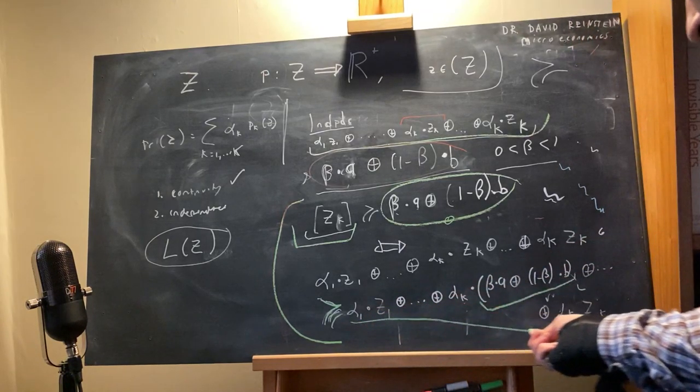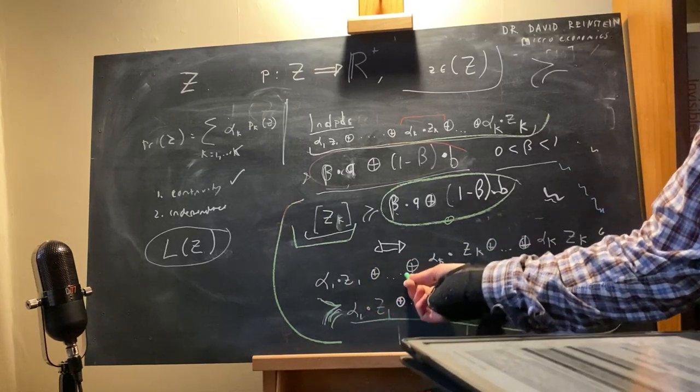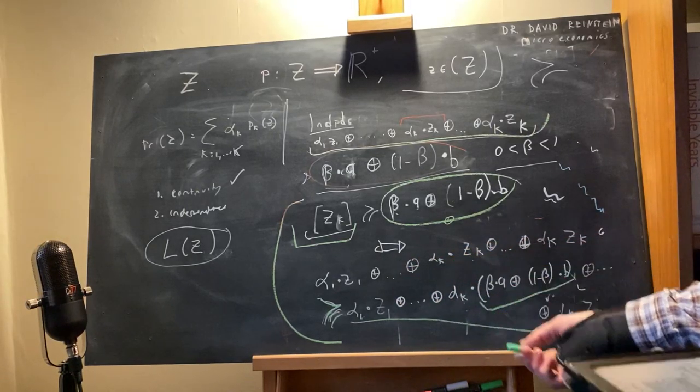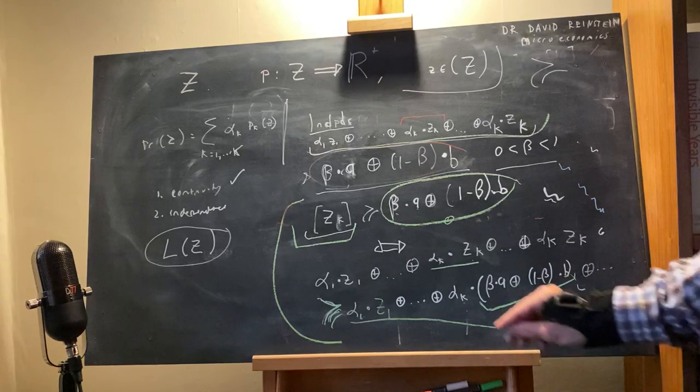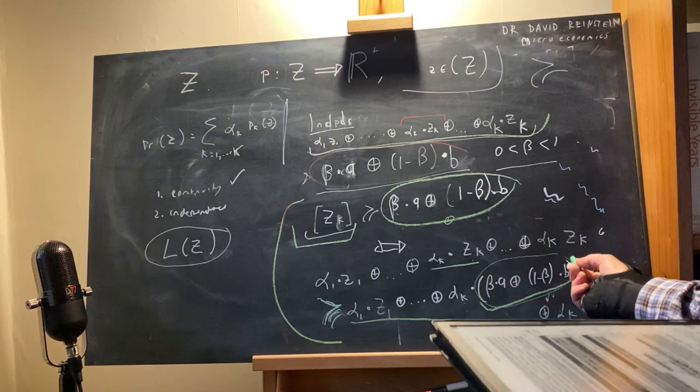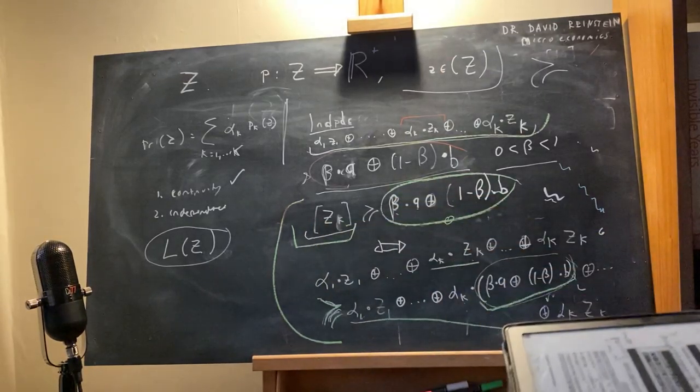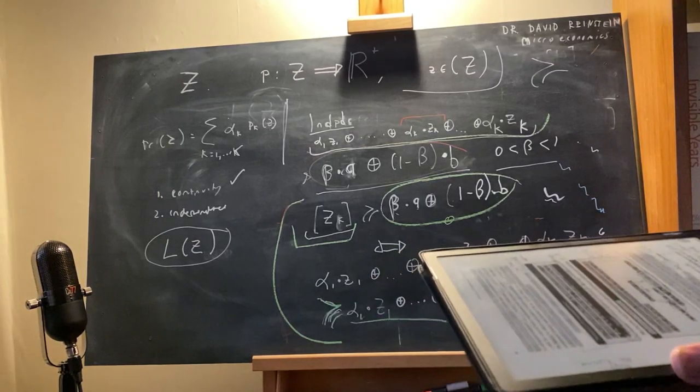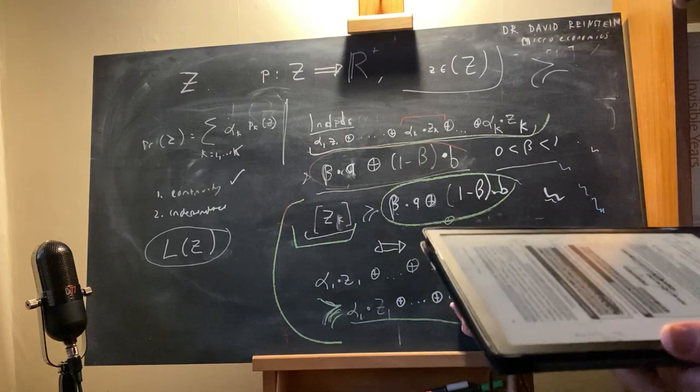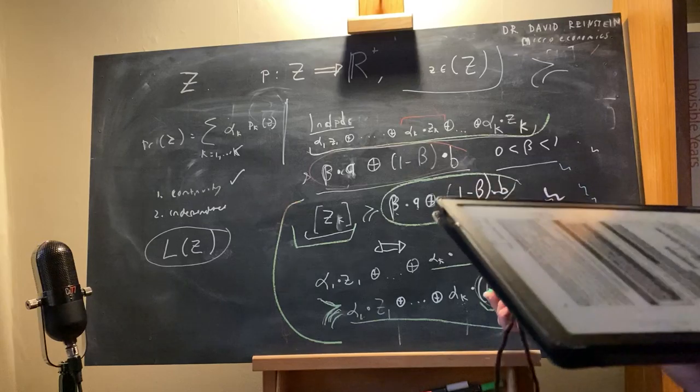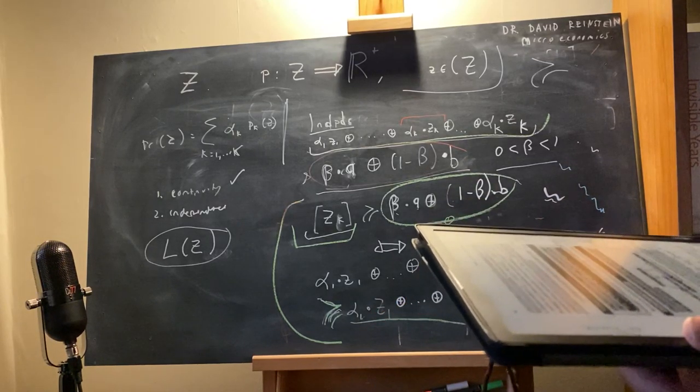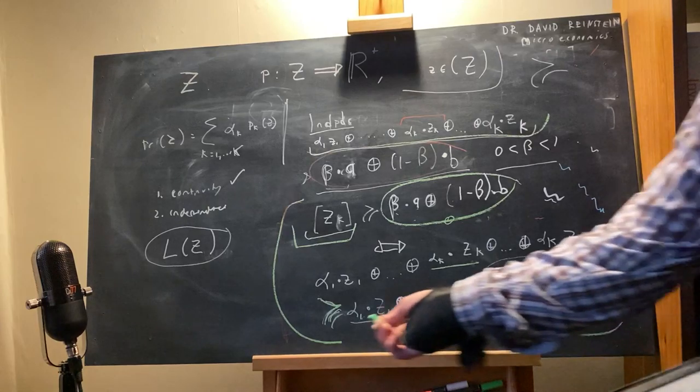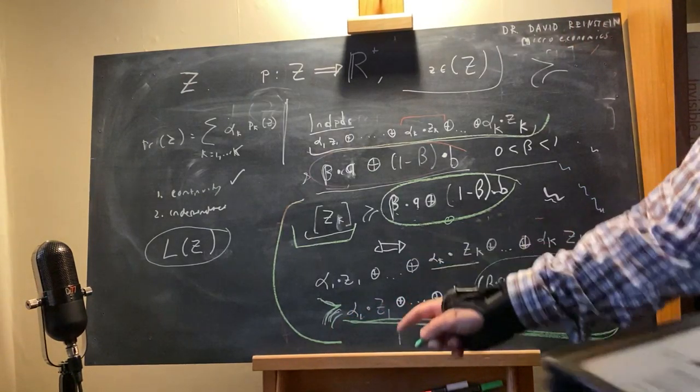So now I have this compound lottery, right, this is just the compound lottery. So we have alpha probability of Zed 1, same as here, alpha 2 probability of Zed 2, perhaps, dot dot dot. Here we have alpha K probability of Zed K. Instead here we have alpha K probability of this other lottery, right? And of course you could reduce this to a simple lottery, because we know that if there's a probability alpha K of having this lottery which has probability beta of outcome A, that means that there's alpha K times beta probability of outcome A. But for now, just think about it as, with probability alpha K, instead of having this certainty Zed K, we have this other lottery.